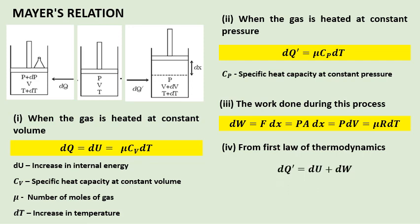dQ prime equals dU plus dW. That is, the supplied heat energy equals the increase in internal energy of the gas plus the work done by the gas.